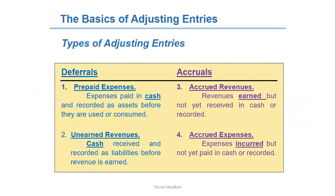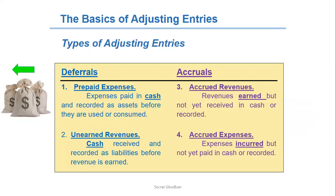The different types of adjusting entries can be divided into two main categories: deferrals and accruals. In the deferrals, the first group is prepaid expenses — expenses paid in cash and recorded as assets before they are used or consumed. For example, if we are paying one year's rent, we're paying cash for one year but haven't yet consumed the rent service. This is why it's a cash credit and prepaid expense — prepaid rent is an asset account.